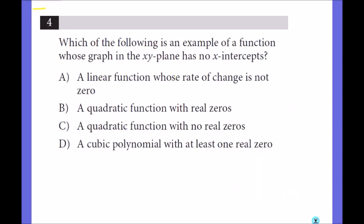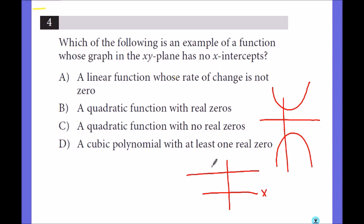Which of the following is an example of a function whose graph in the xy-plane has no x-intercepts? So that means it will not go through the x-intercept, meaning it will not have any solutions. A linear function whose rate of change is not 0. So if it was a linear function with slope 0 it looks like this, so then there is a possibility it won't hit the x-axis. But if there is a slope it will always hit the x-axis so A is not true.